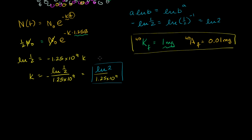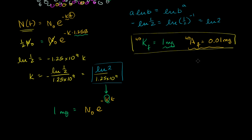We know that n, the amount we're left with, is 1 milligram, equal to some initial amount n₀ times e to the negative kt. We need to figure out what our initial amount is. For every argon-40 we see, that must have decayed from potassium-40: 11% of potassium-40 decays into argon-40, and the remaining 89% decays into calcium-40 — we saw that in the last video.